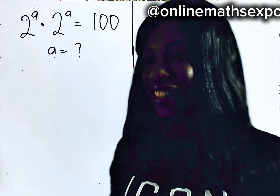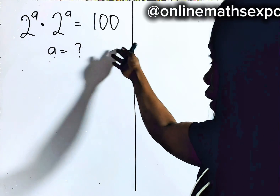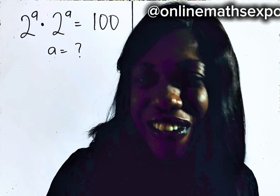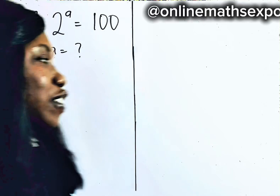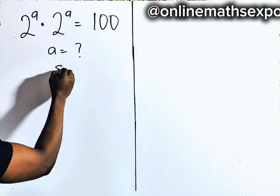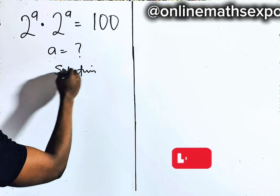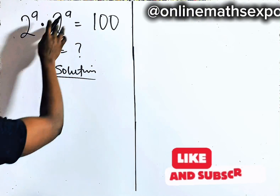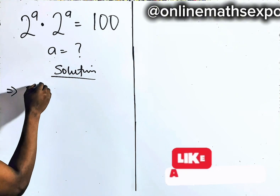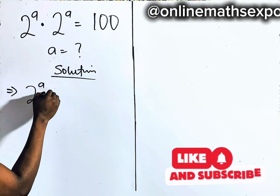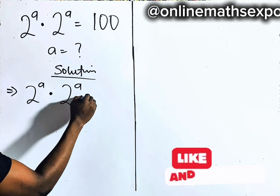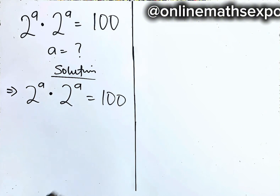Welcome, and let's solve this beautiful equation together. So let's begin with our solution. This is what we have: 2 to the power of a, multiplied by 2 to the power of a, is equal to 100.